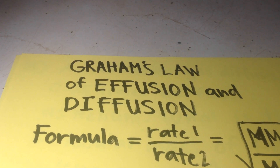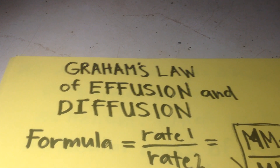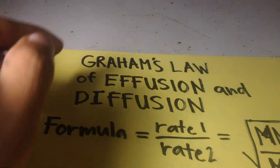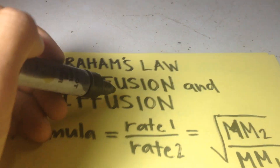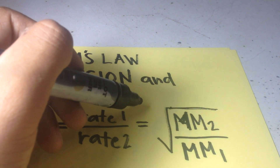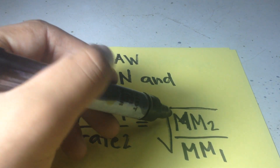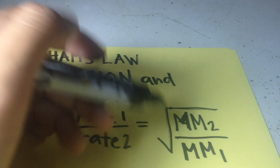Hello everyone, in this video we're going to solve Graham's law of effusion and diffusion. So this is the formula: rate 1 over rate 2 is equal to the square root of molecular mass of 2 over molecular mass of 1.